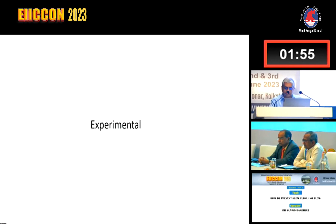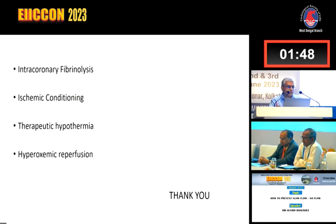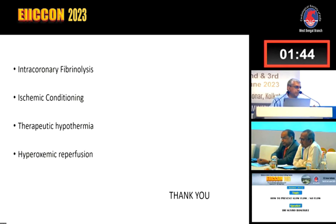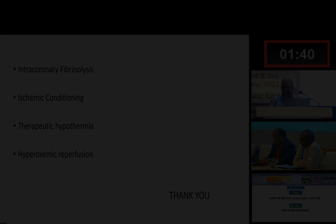Finally, experimental strategies include intracoronary fibrinolysis, ischemic preconditioning or conditioning, therapeutic hypothermia, and hyperoxygenated reperfusion. These have not been shown to reliably help. Thank you very much.